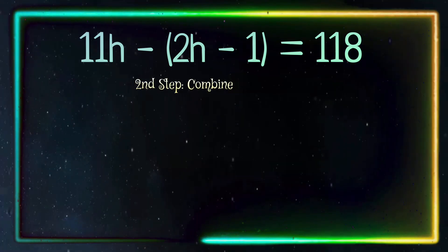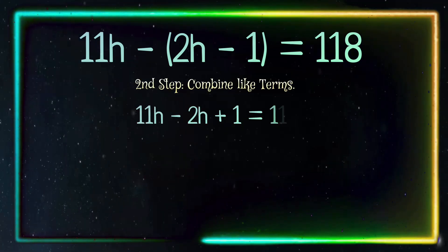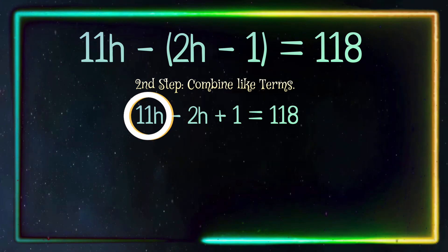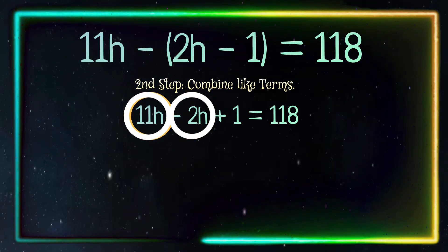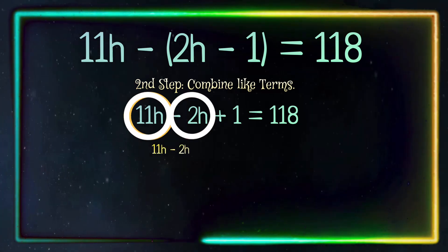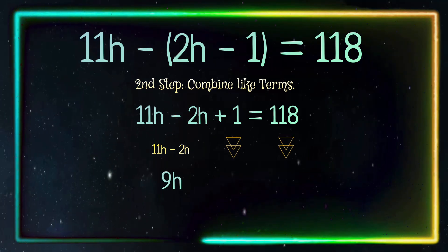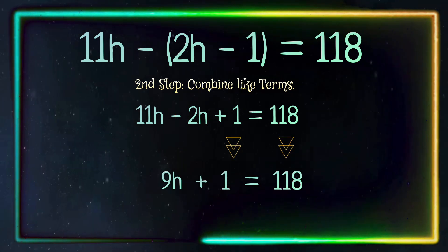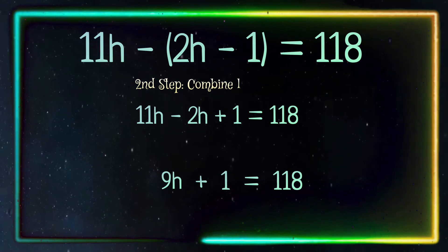The second step is to combine like terms. We have 11h and negative 2h. 11h minus 2h equals 9h. We bring down the rest of the equation and we have 9h + 1 = 118.